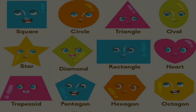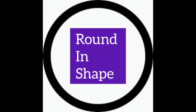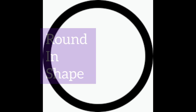This is circle, round in shape, like a ring. This is circle. Children, repeat with me: this is circle, round in shape, like a ring.